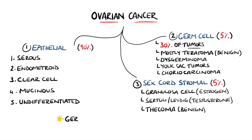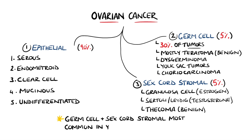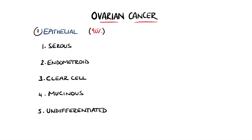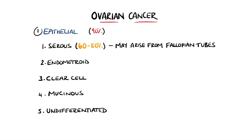Germ cell and sex cord stromal tumors are the most common types seen in young females. Turning back to the most common type, epithelial — serous is the most common, making up between 60% and 80% of epithelial ovarian cancer, and is thought to arise initially from cells in the fallopian tubes.